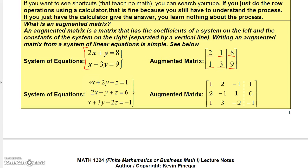Now this one: the coefficients for x is 1, y is 2, z is negative 1, and the constant is 1 — so the first row is 1, 2, negative 1, 1. The second row is 2, negative 1, 1, 6. And then the third row has an understood 1, then 3, negative 2, and negative 1. So that's how you take a system of equations and write it as an augmented matrix.